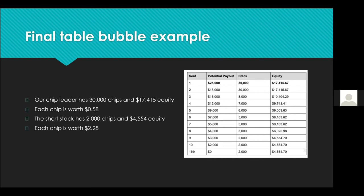This illustrates that there is no linear relationship between stack size and equity. As you get closer to bubbles this becomes more pronounced. The chip leader's chips are only worth 58 cents each while the short stacks' chips are worth $2.28 each. We sometimes refer to this as a punishment factor — you're being punished for being the big stack, and conversely rewarded for being the short stack because your chips are worth more.